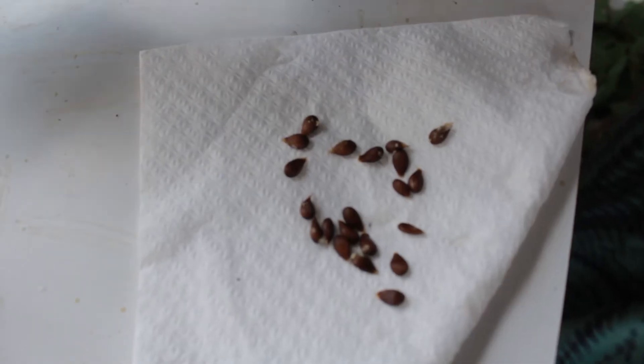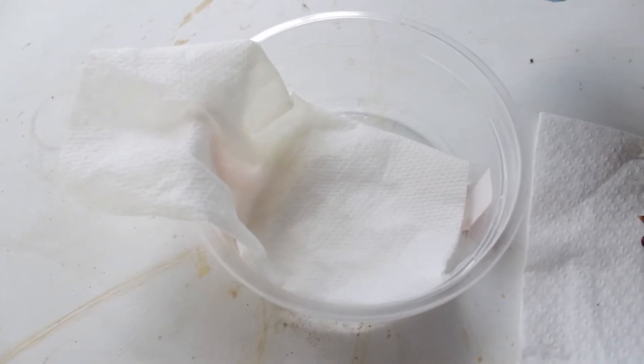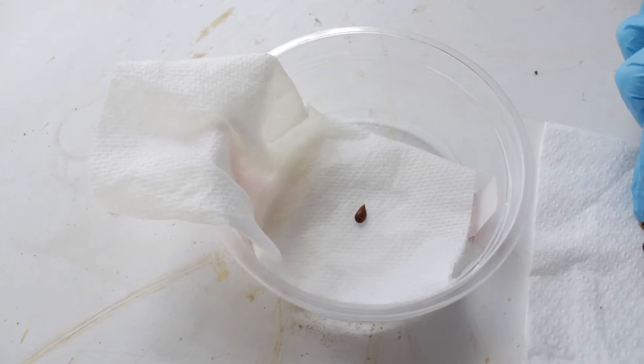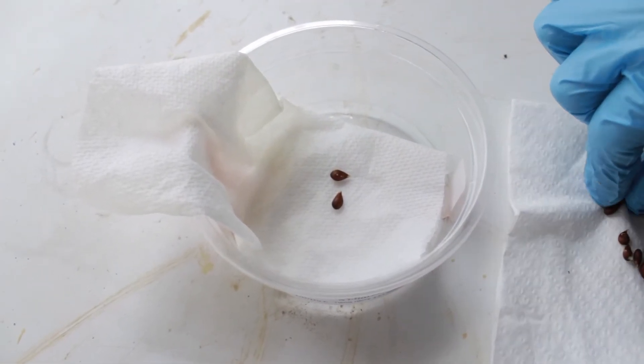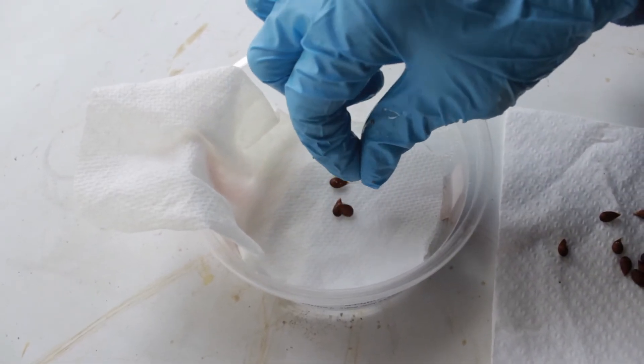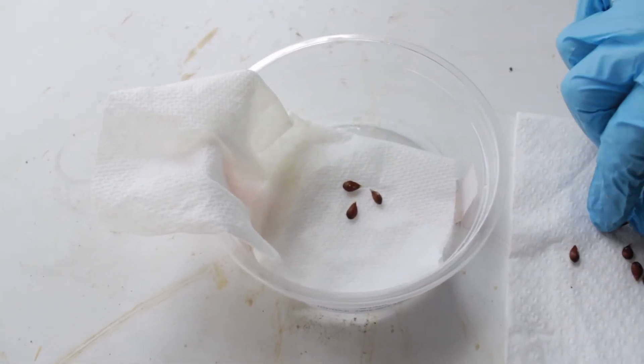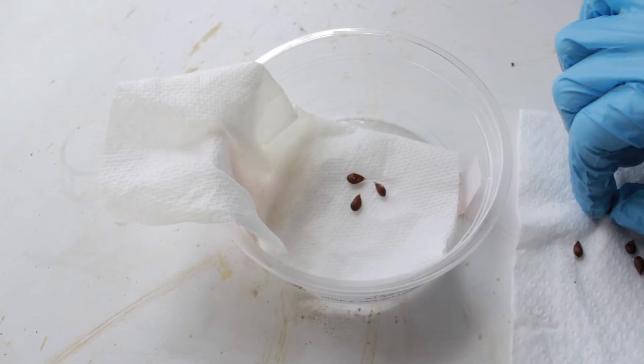You want to pick about 10 and put it on a moist napkin. Put it on a moist napkin and collect about 10 or so. The reason you're using 10 is that not all of them are going to make it, and if they make it, not all of them are going to be healthy.